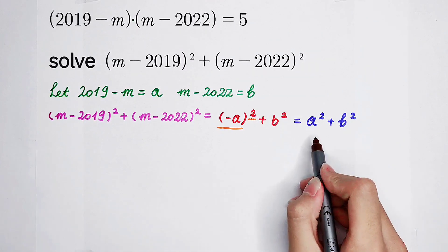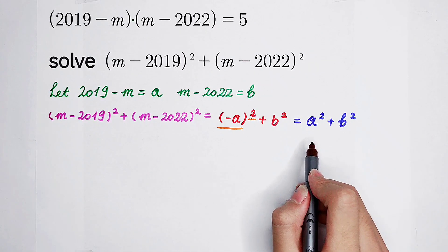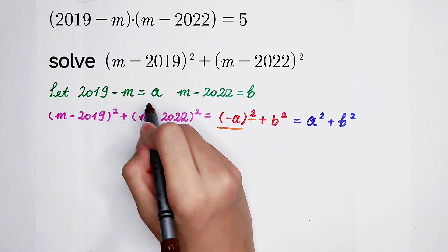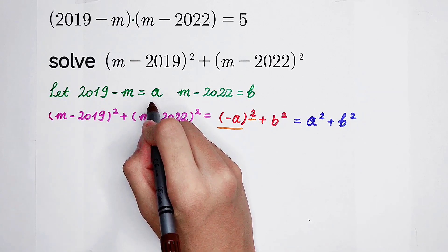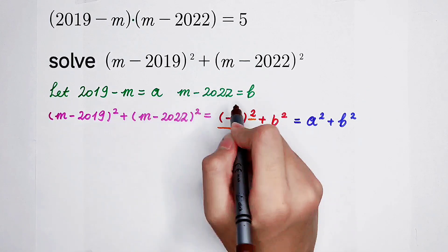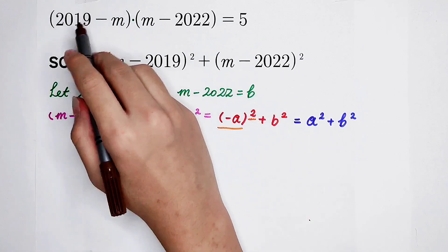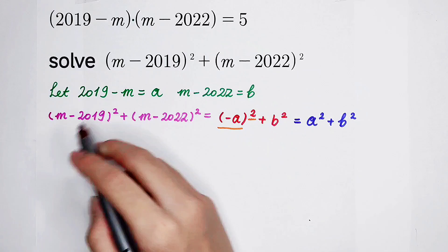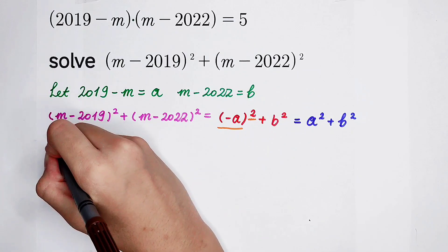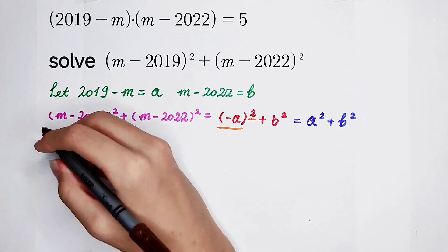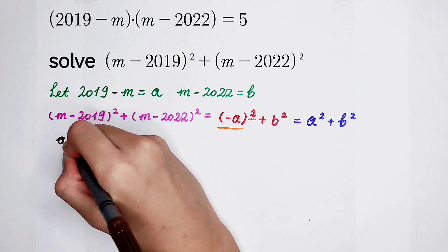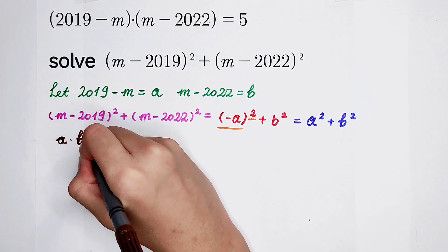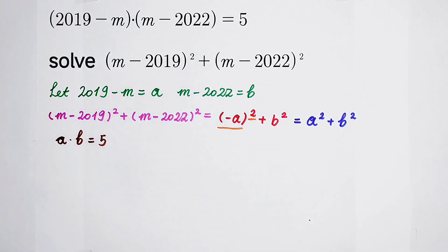We just need to solve a squared plus b squared. To do that, I need a system of equations involving a and b. Because a times b equals 5, that is our first equation: a times b equals 5.